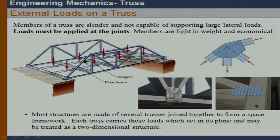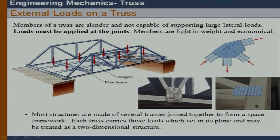When we want to make a space framework — for example, a bridge — several trusses are jointed together. As shown, we have two trusses jointed together with the help of floor beams and stringers. All movement happens in this area, so that area can be subjected to lateral loads, meaning these members can be in bending. But those floor beams are attached to the joints of the truss, so all loads are transferred to the joints.